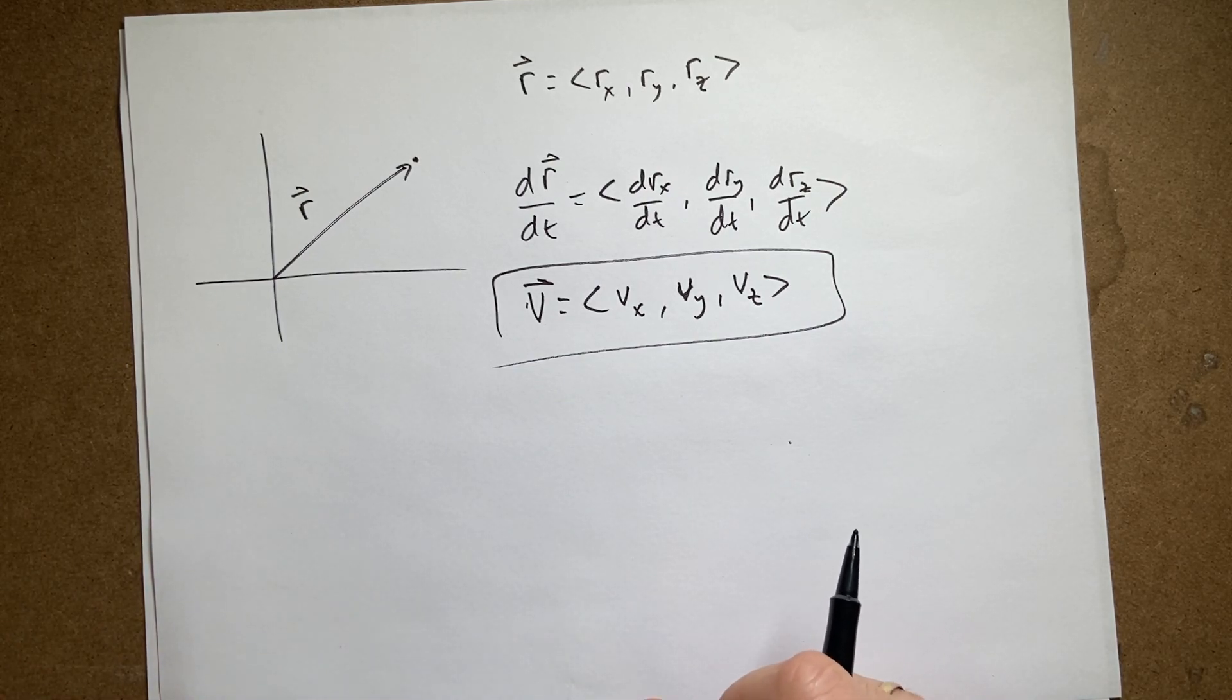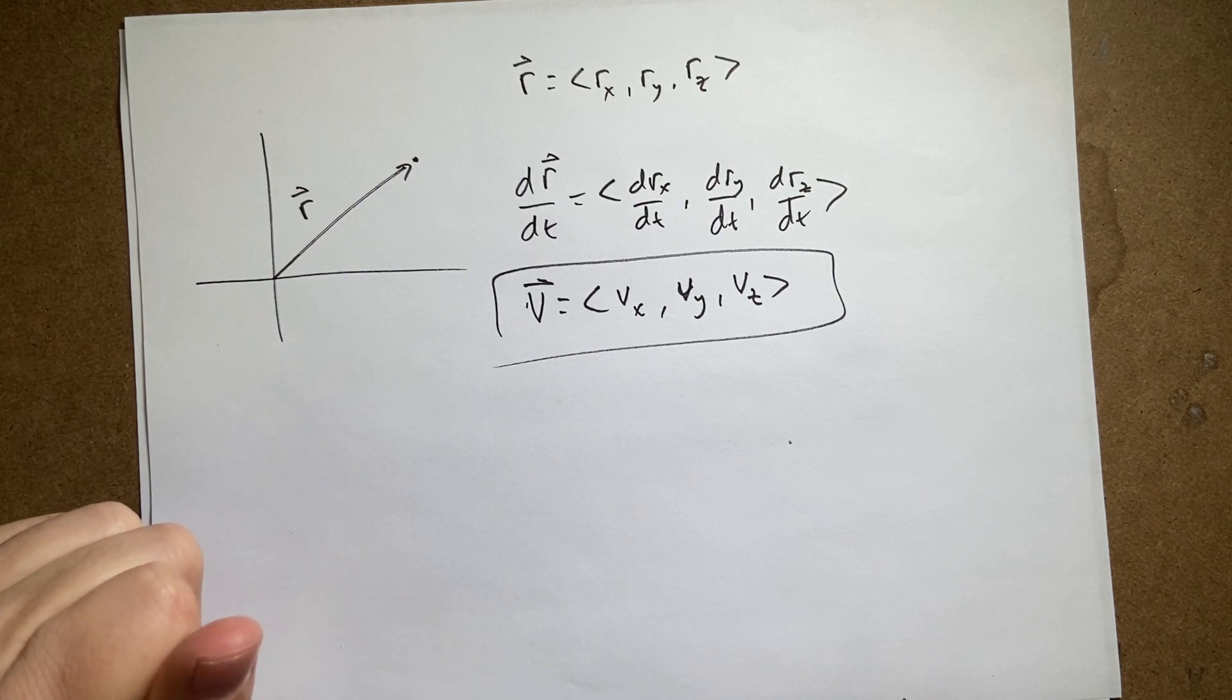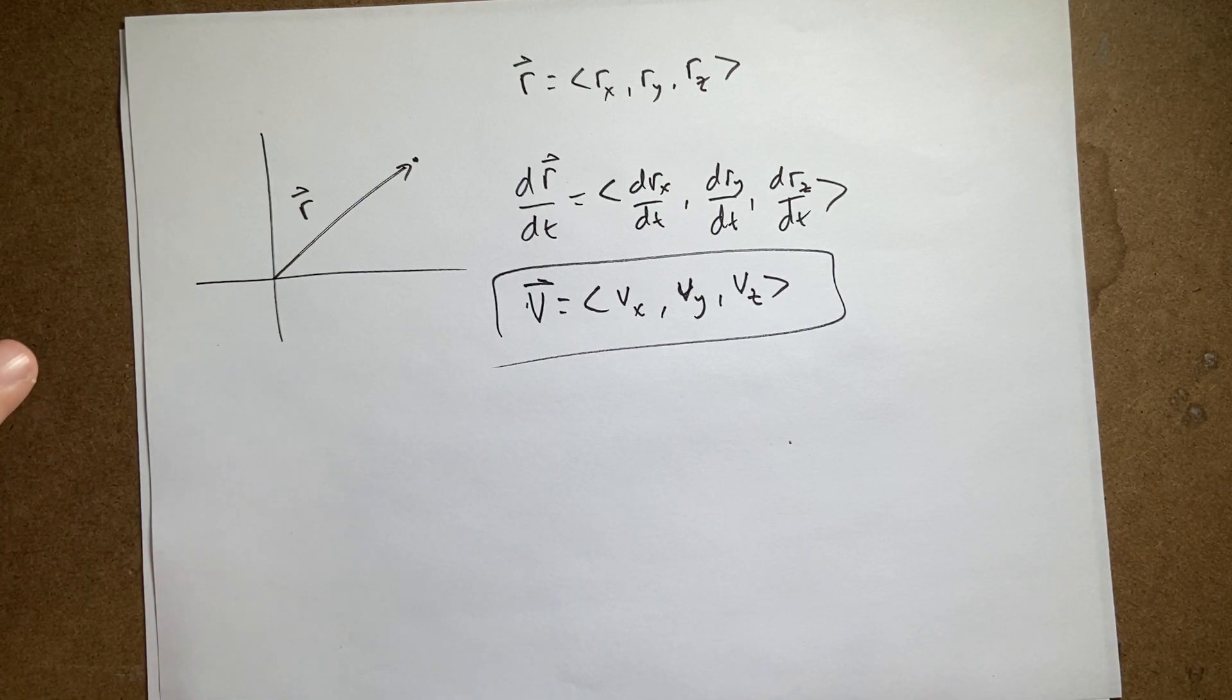Okay. There are some other important vector things, but this is a good start, a good review. We're going to do Cartesian coordinates. We're going to look at motion in Cartesian with Cartesian coordinates. And then we're going to go to cylindrical coordinates and spherical coordinates. It's going to be great. Okay. I'll talk to you guys later.